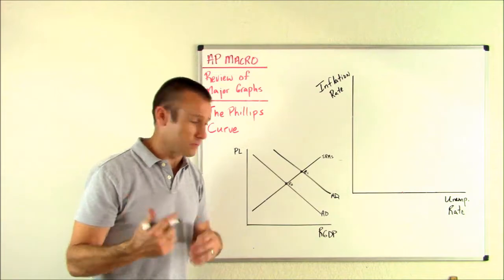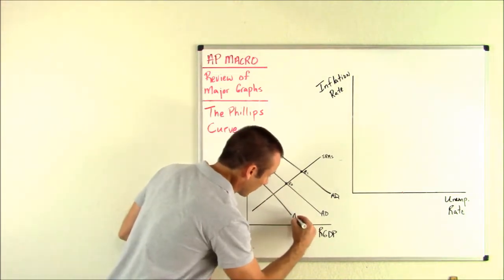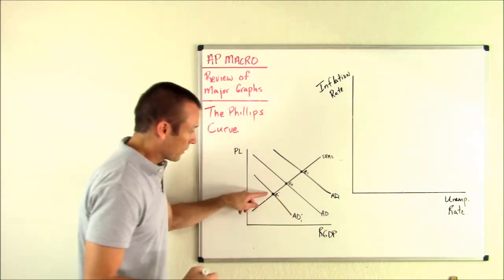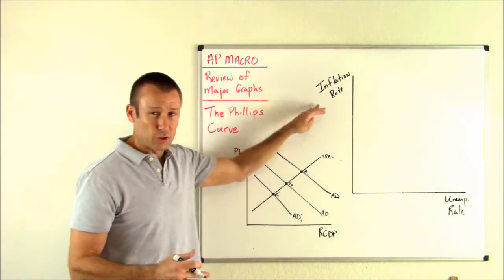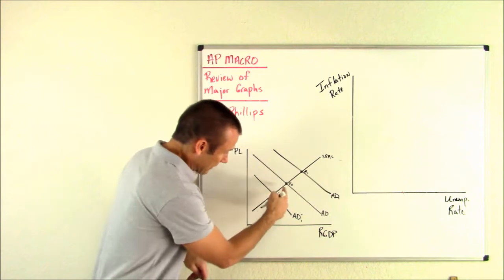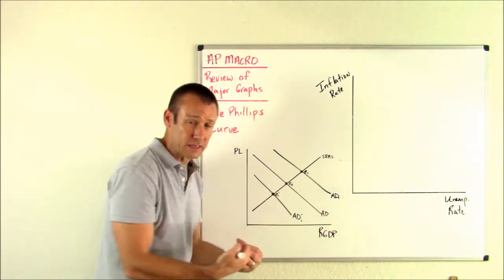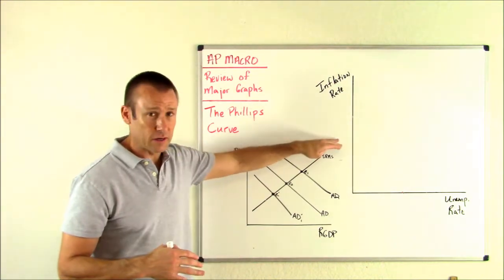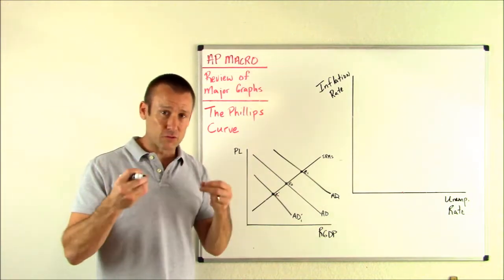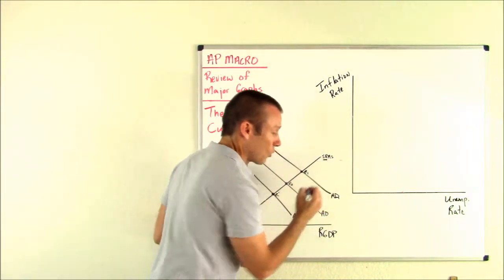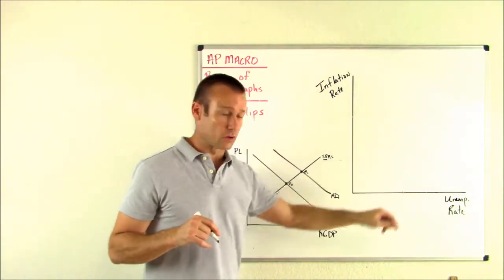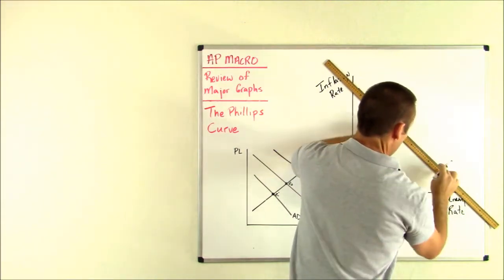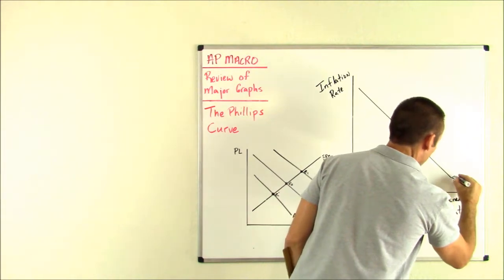You can also have a negative demand shock — AD can shift to the left. AD shifts left to E-sub-one prime. The price level goes down — we associate that with the inflation rate coming down — and real GDP is decreasing, meaning we'll be laying workers off, so the unemployment rate goes up. Inflation rate going down, unemployment rate going up — inverse relationship again. In the short run, there is very much an inverse relationship between these two. So we draw a downward sloping line representing this inverse relationship — that is our short-run Phillips Curve.